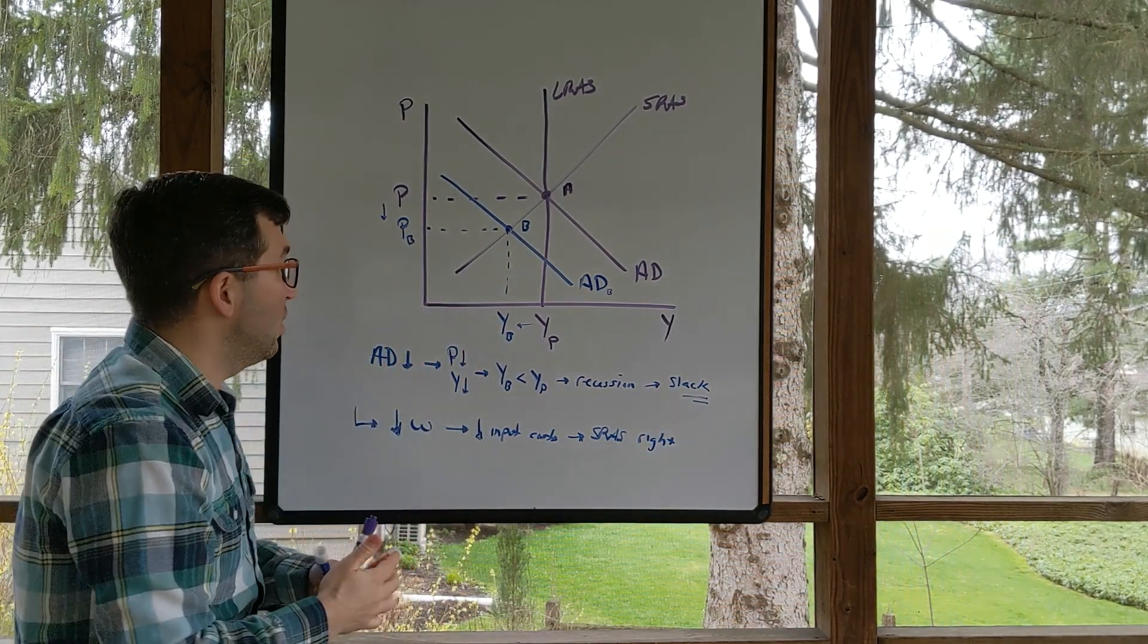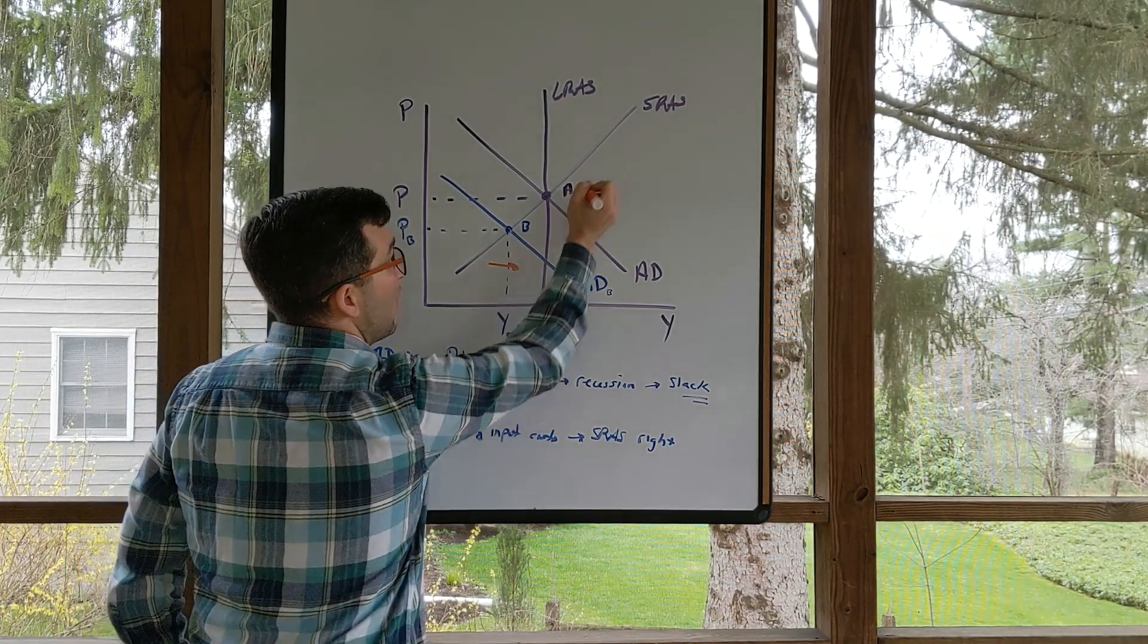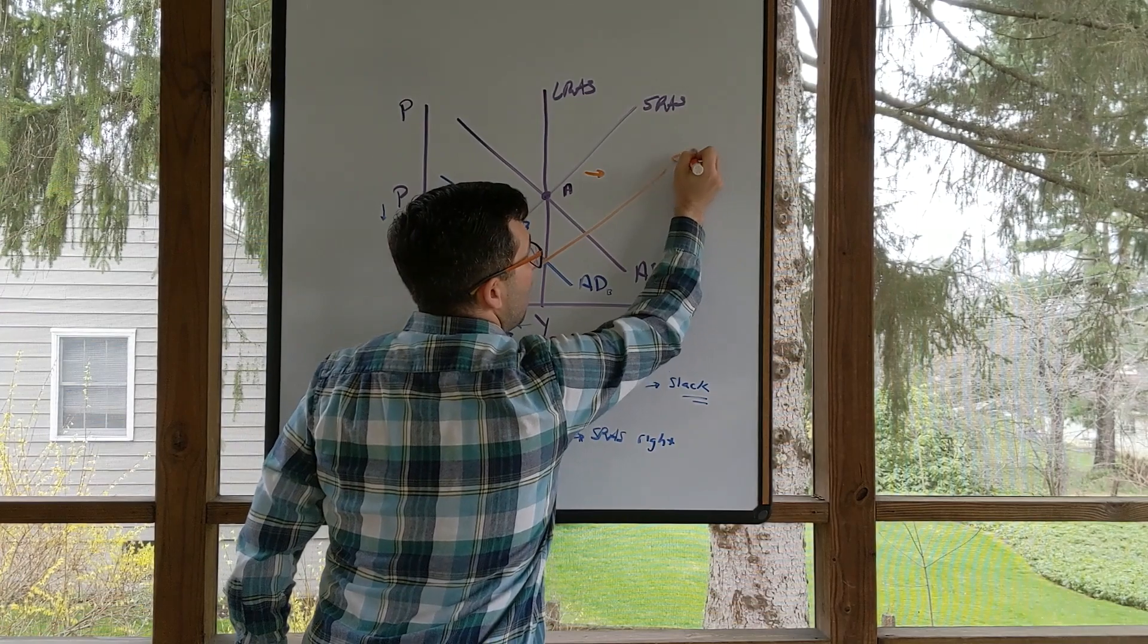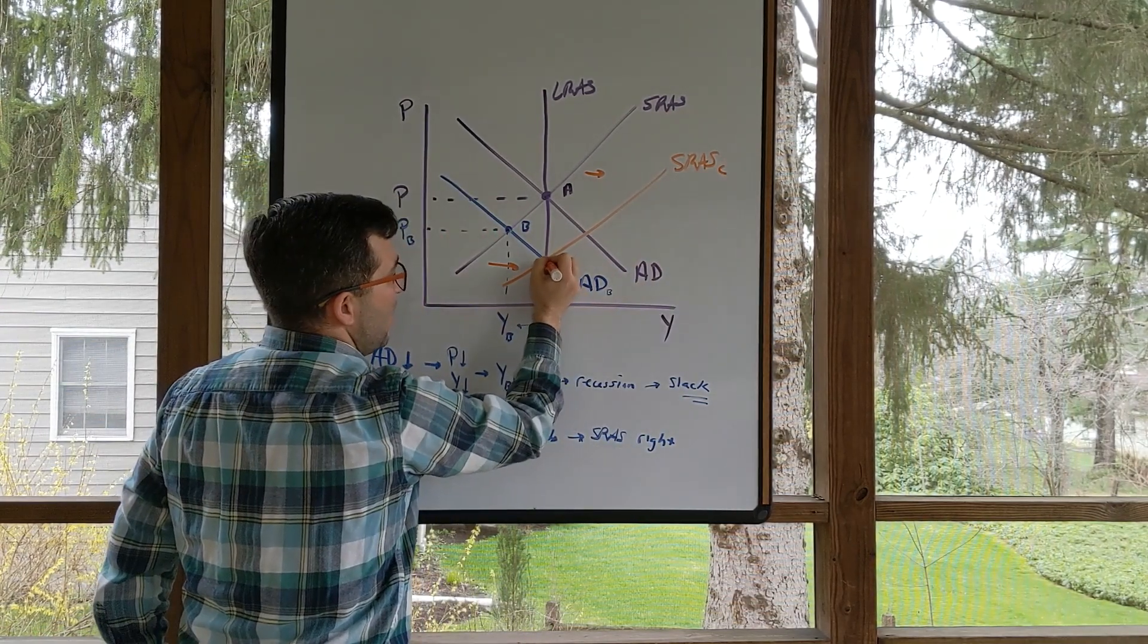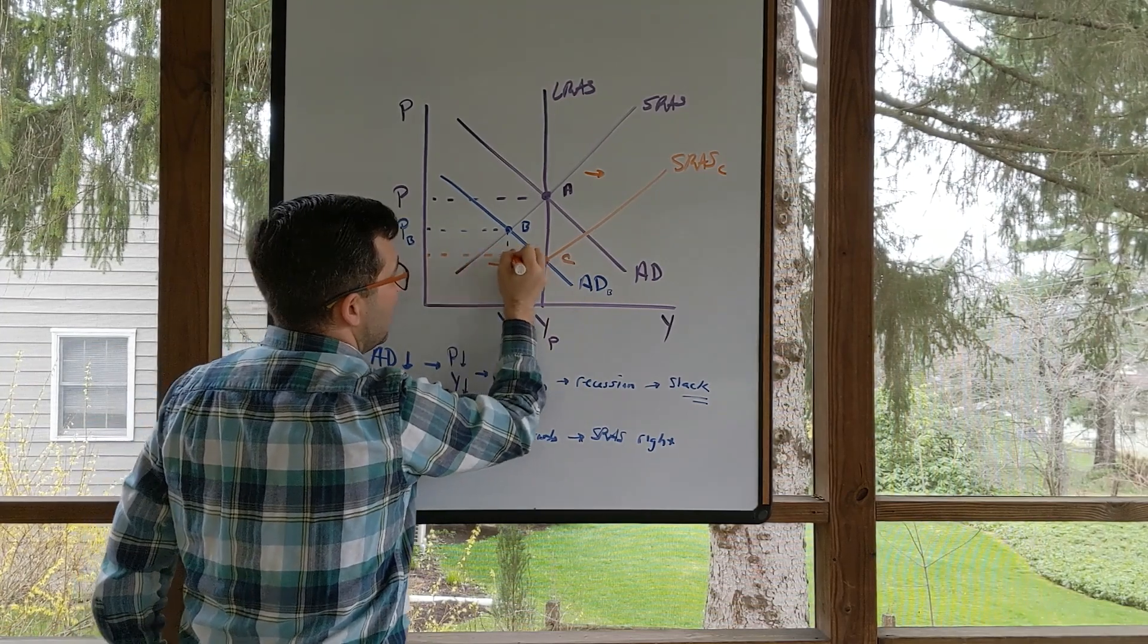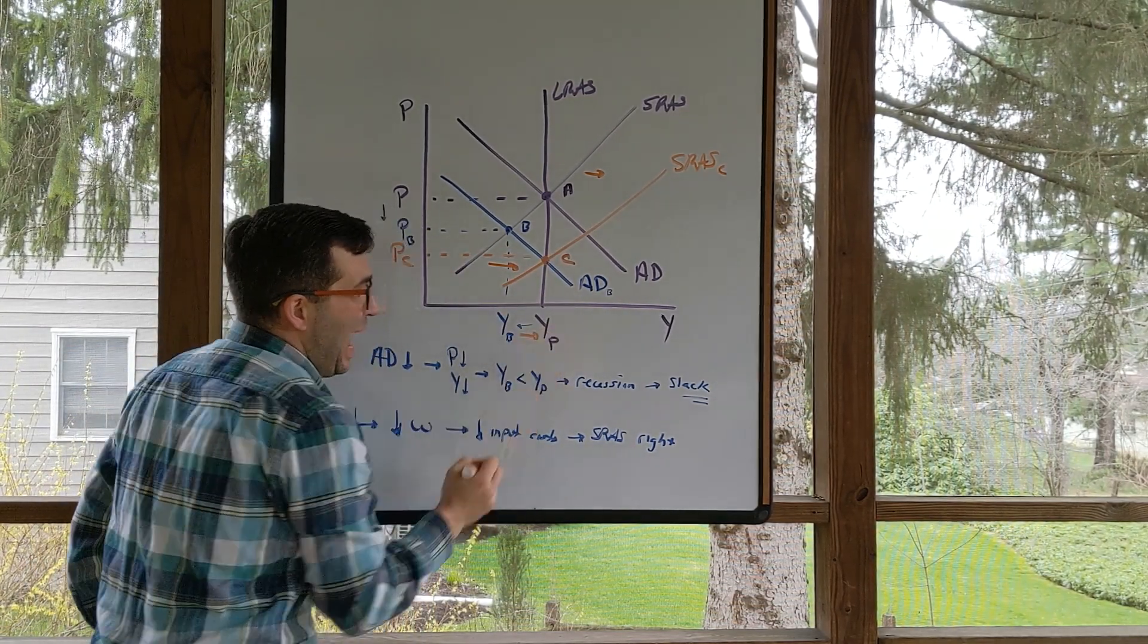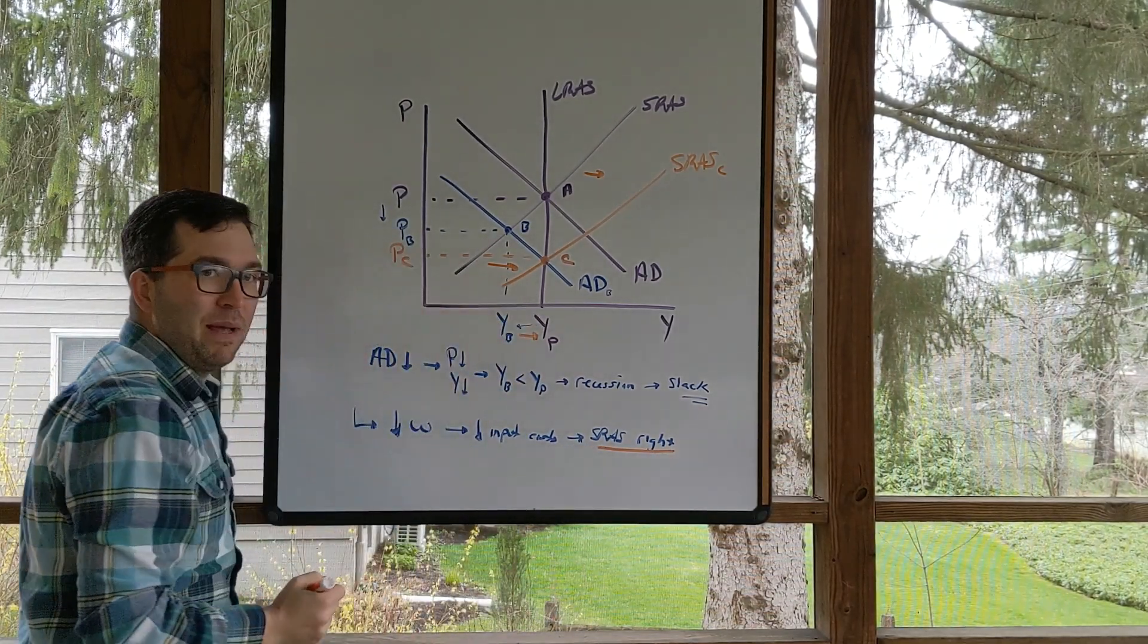Let's do that in a different color and label it as point C. So eventually, this will show the short-run aggregate supply curve moving to the right. Let's call this SRAS associated with point C. We have price level C, and we move back to potential GDP. Short-run aggregate supply shifts back to the right.